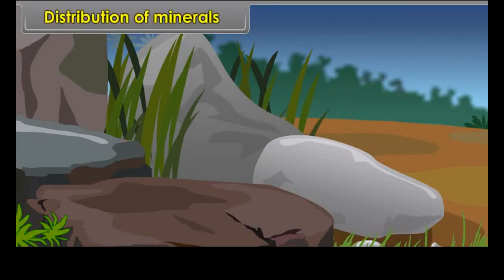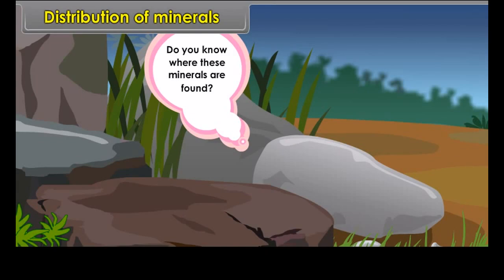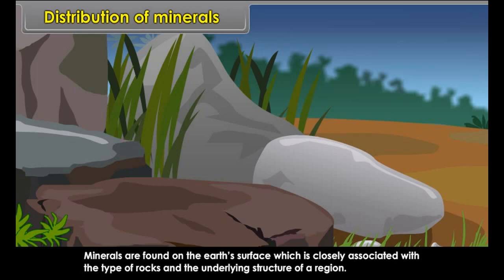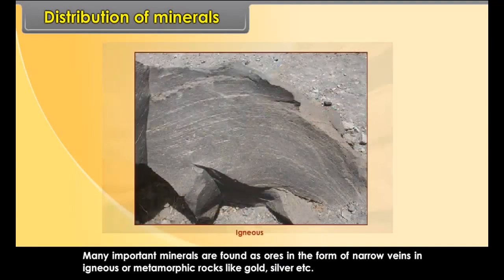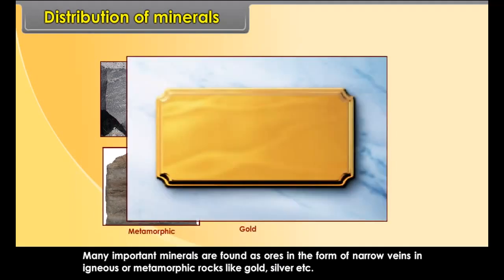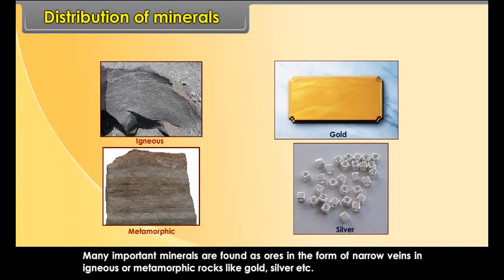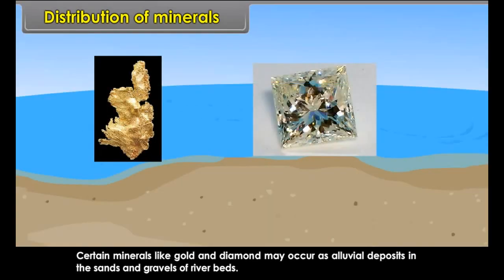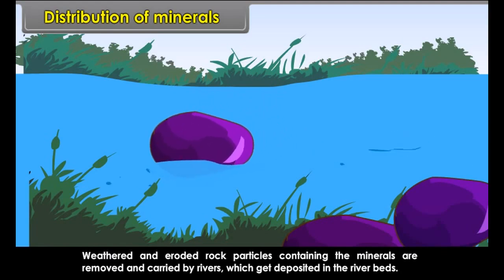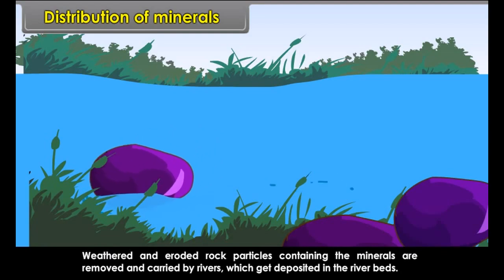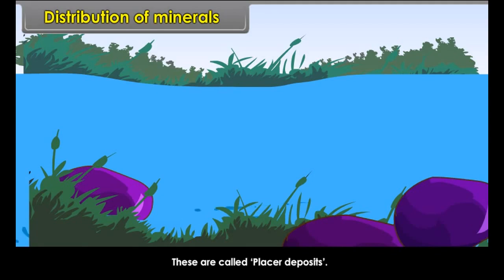Distribution of minerals are found on the earth's surface which is closely associated with the type of rocks and the underlying structure of a region. Many important minerals are found as ores in the form of narrow veins in igneous or metamorphic rocks like gold, silver, etc. Certain minerals like gold and diamond may occur as alluvial deposits in the sands and gravels of river beds. Weathered and eroded rock particles containing the minerals are removed and carried by rivers which get deposited in the river beds. These are called placer deposits.